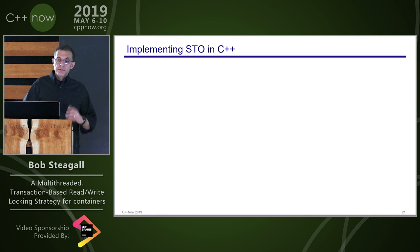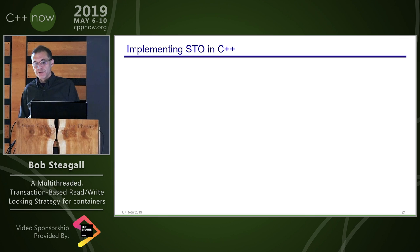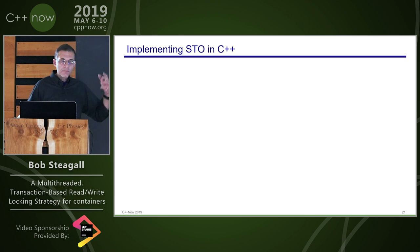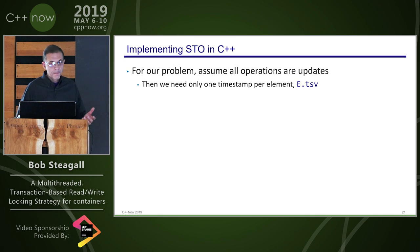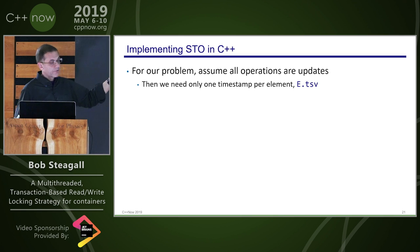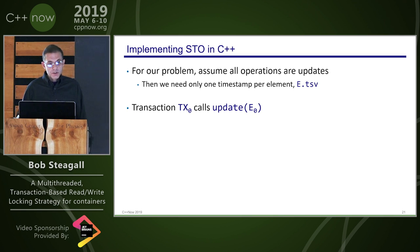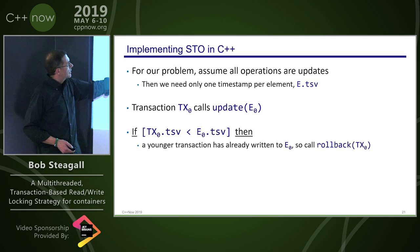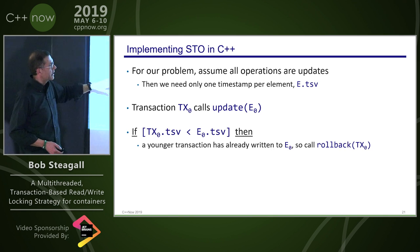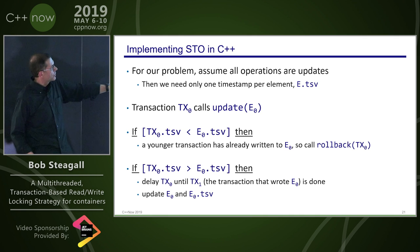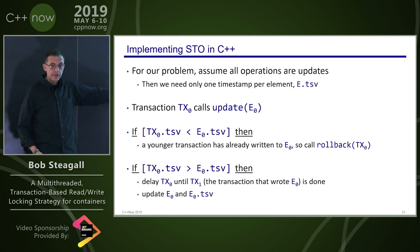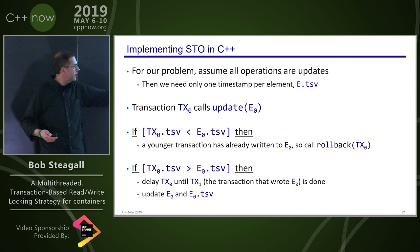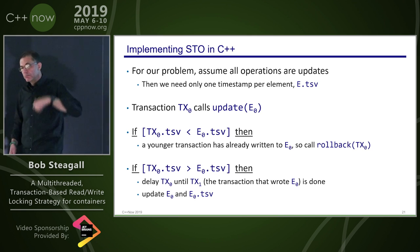In my particular case, every operation was a write — I didn't need the read case, which simplified the logic. With only write operations, I only needed one timestamp per element. If my transaction's timestamp is less than the last write timestamp, a younger transaction has already written — I roll back. If my timestamp is greater, I wait, update the element and its related group, and move on.